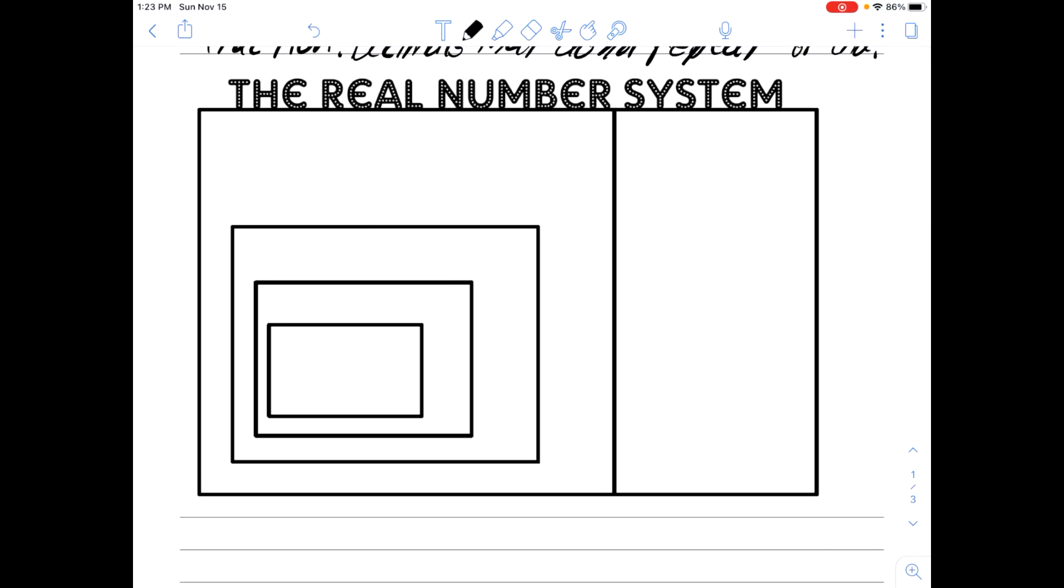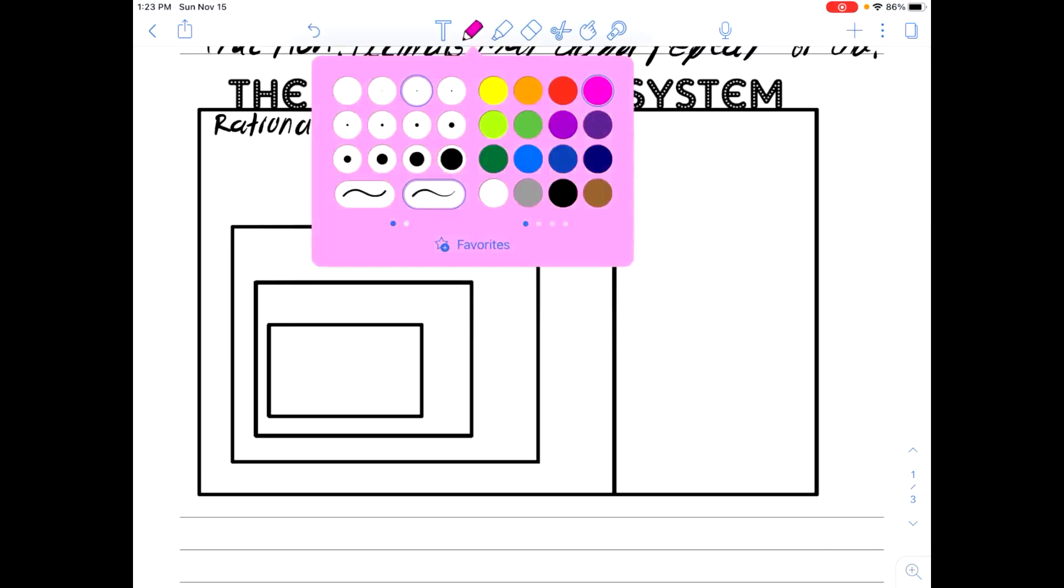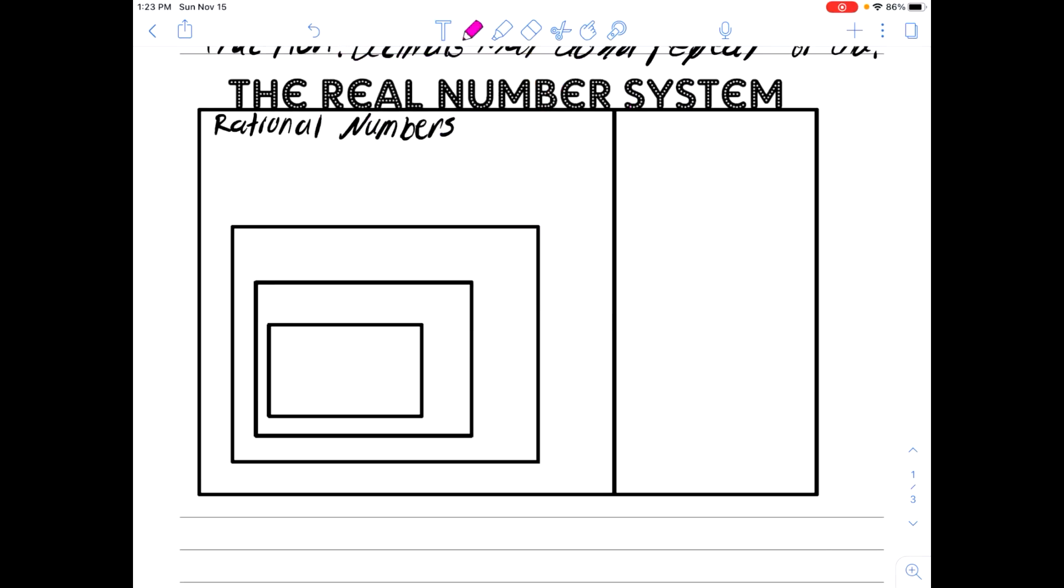So first, we have in real numbers, we have in this box what are called rational numbers. Rational numbers is a very broad term. This can be numbers such as a decimal, 5.37, for example.